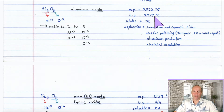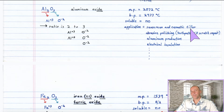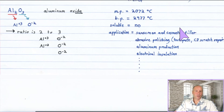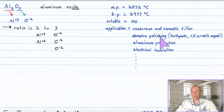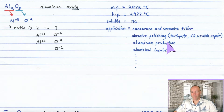Al₂O₃ has pretty high melting and boiling points and is not soluble in water. It is used as a filler in sunscreen and cosmetic pastes — not quite the active ingredient, but it provides the bulk of the material. It's a pretty hard substance, so ground into powder it can be used as an abrasive polishing agent such as in CD repair pastes and toothpaste. It's also used in aluminum production and electrical insulation — there are many, many uses of aluminum oxide.